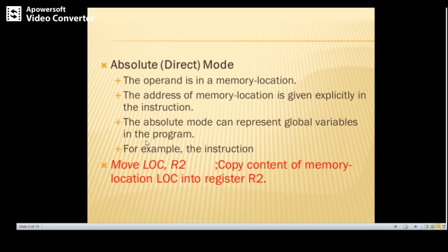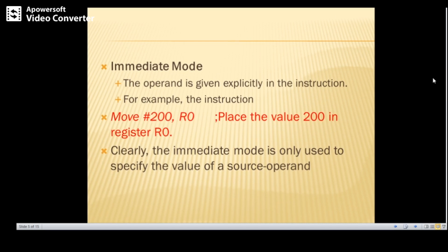In the case of immediate mode, the operand is given explicitly in the instruction itself. For example, MOVE #200, R0 means the value 200 is directly copied into R0. Immediate mode is only used to specify the value of a source operand.